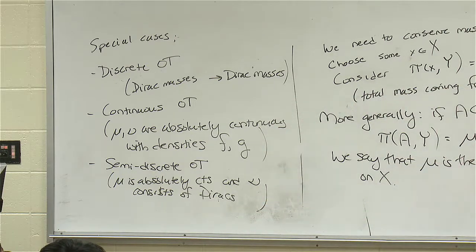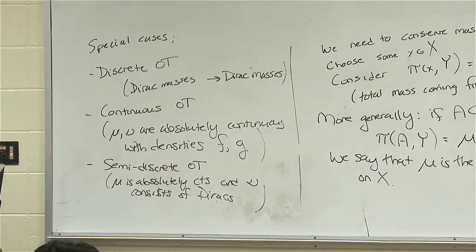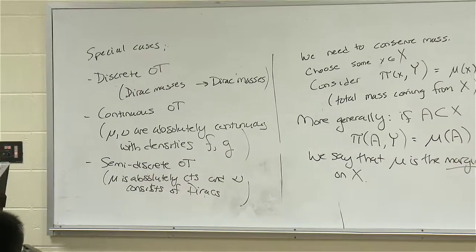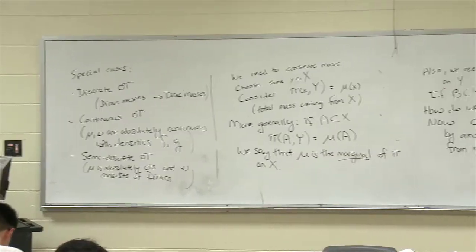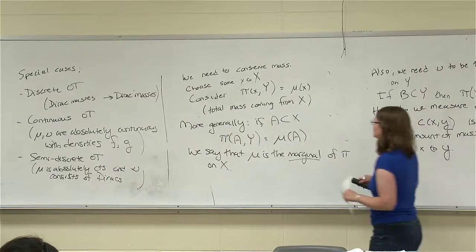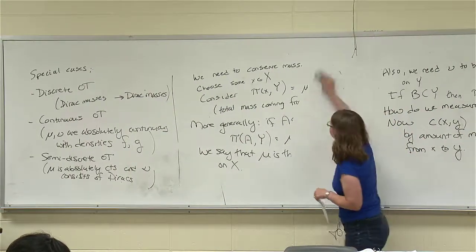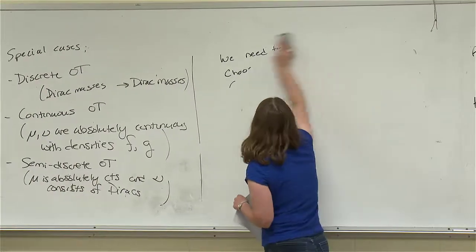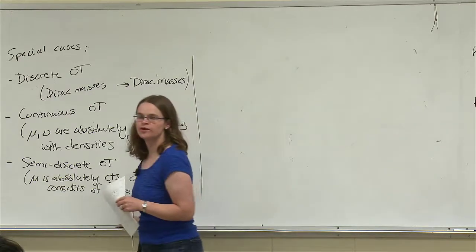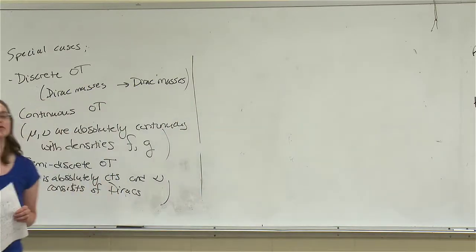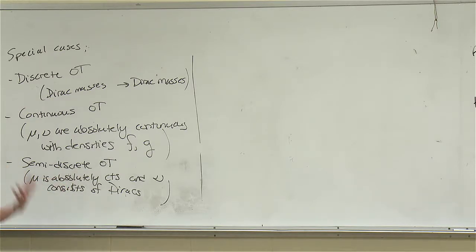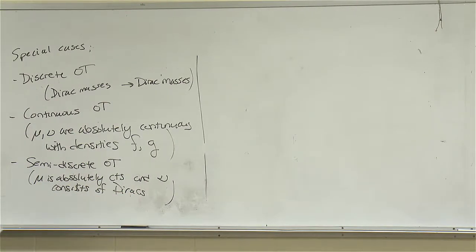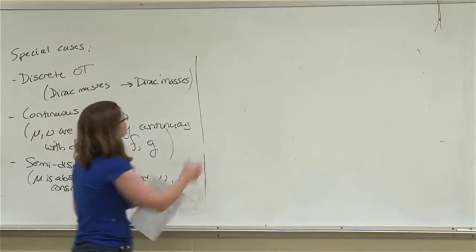Now I want to build up understanding of this problem: does it make sense, do we have a minimum, what are properties of the transport plan, and how do we compute it? I'm going to start simple — start with one dimension. Let's see what tricks we can learn in 1D, some of which translates to higher dimensions and some of which doesn't. One dimension is fundamentally easier than higher dimensions.